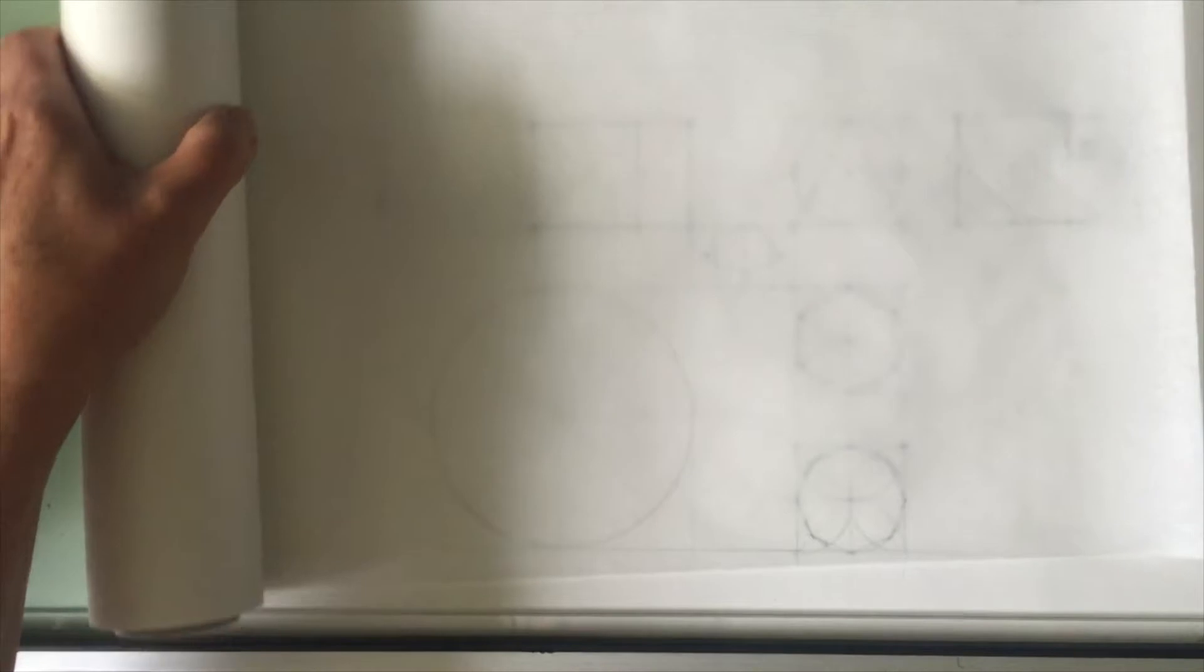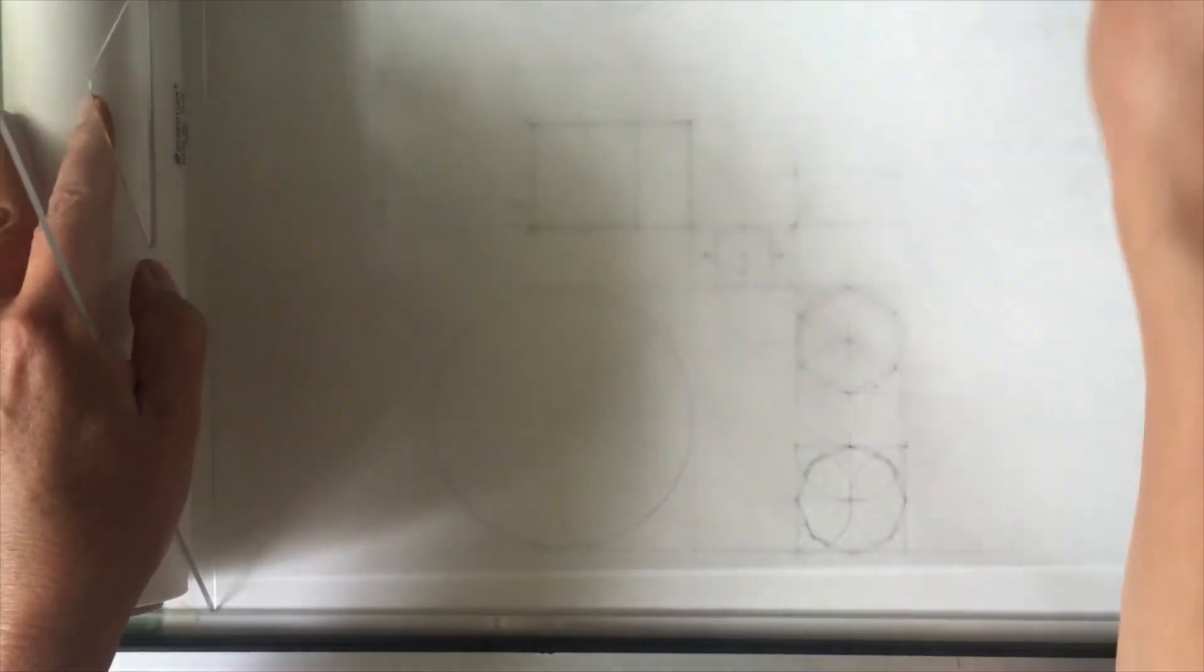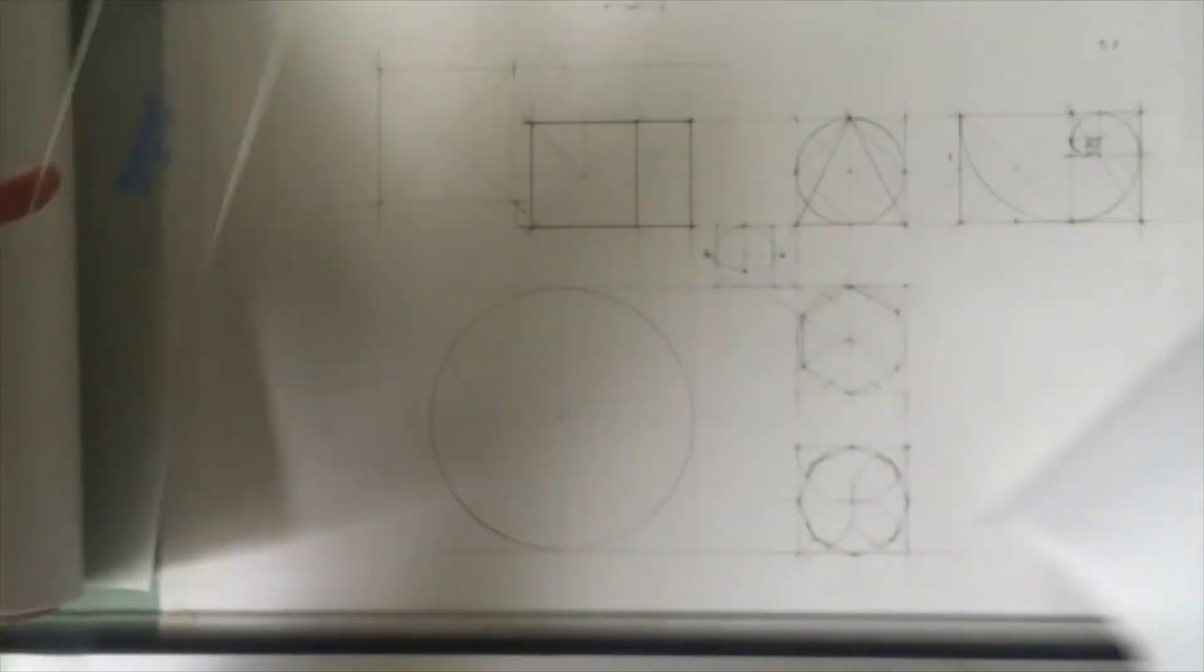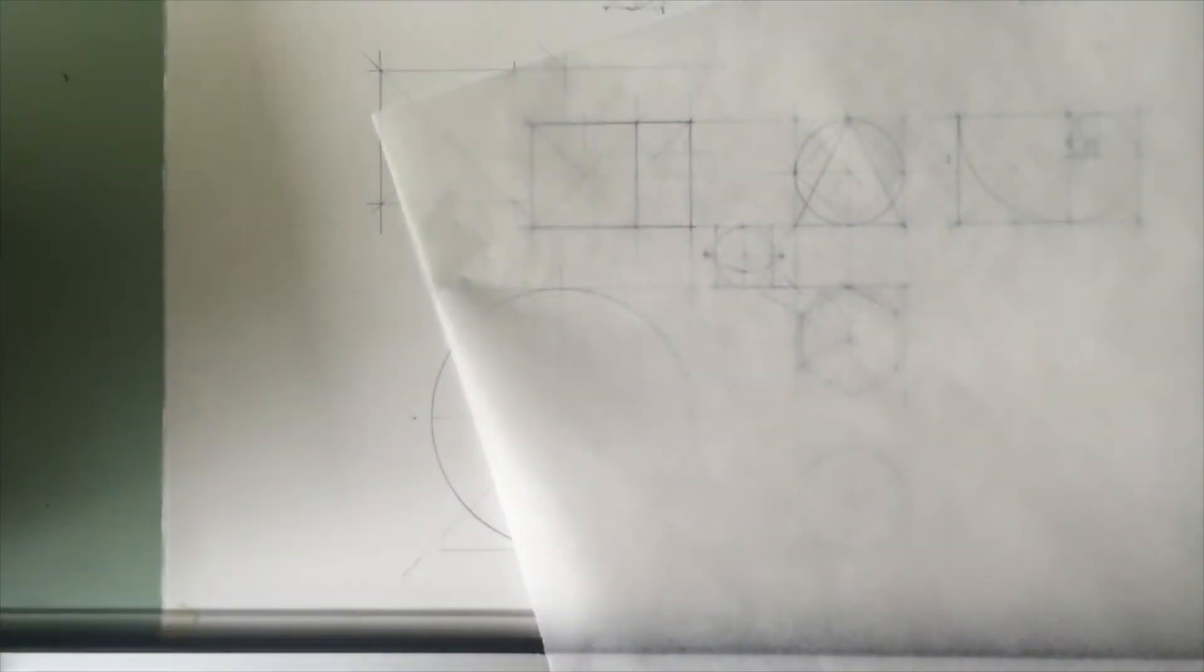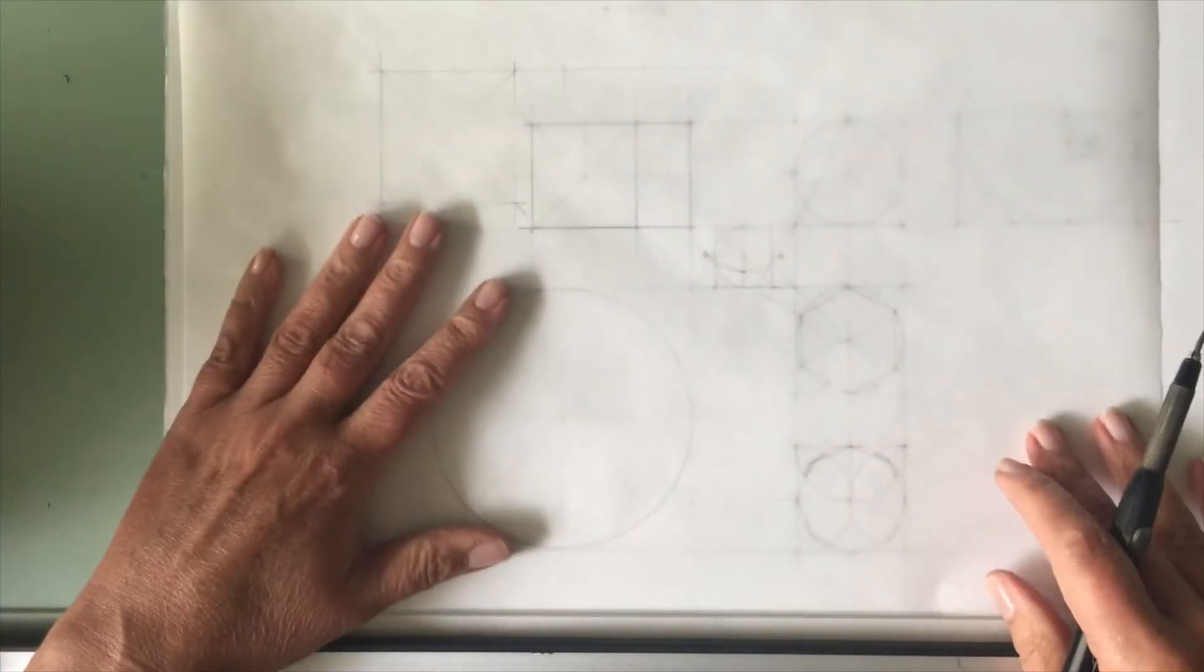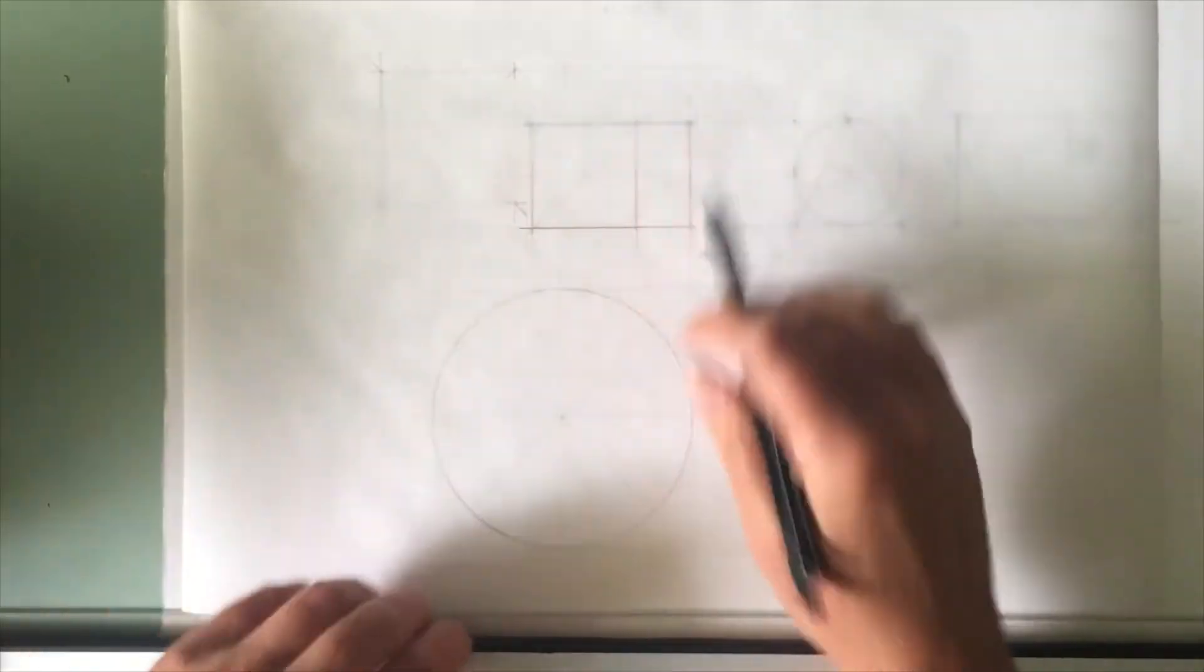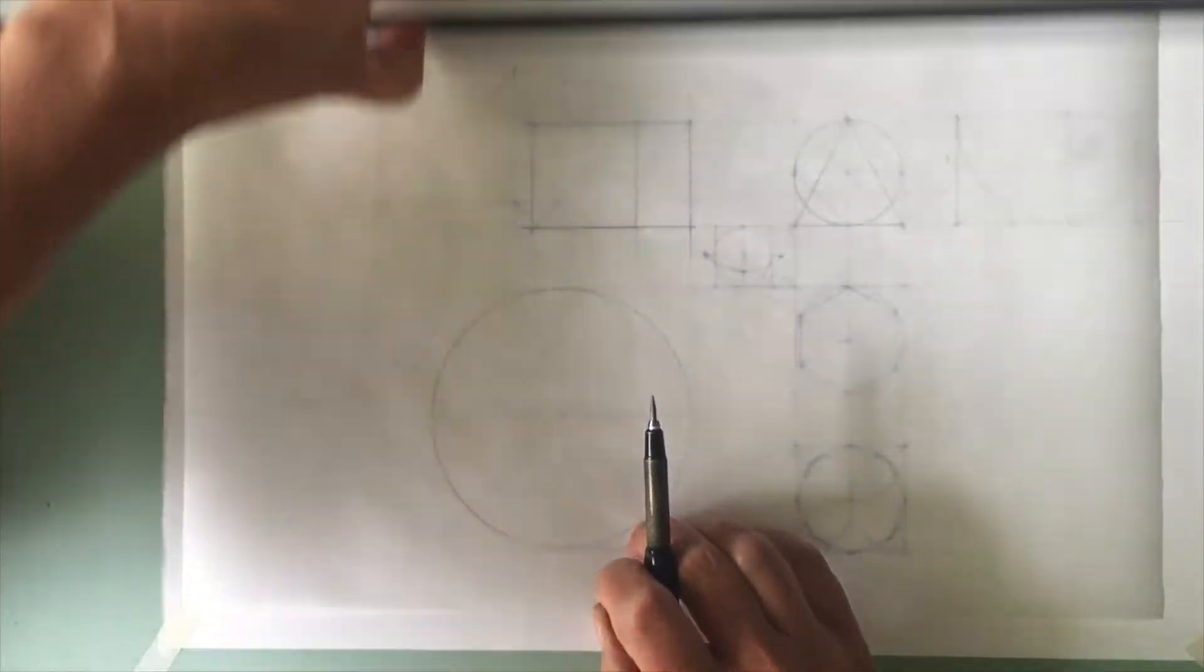Having drawn that, I'm now just going to put some tracing paper over top just to demonstrate how we construct this pentagram and I'm going to do this freehand first and then we're going to draft it. Here we have our circle to begin with.